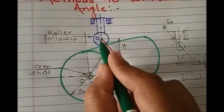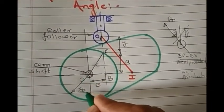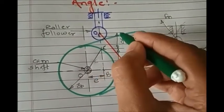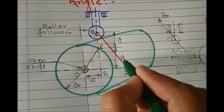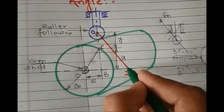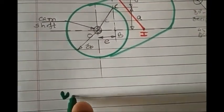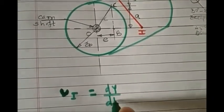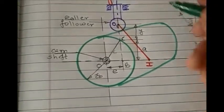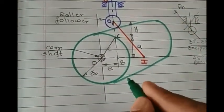Here we have a cam and follower arrangement with a roller follower with an offset distance e. The radius of the base circle of the cam is r_b. The distance travelled by the follower from the base circle is y. The symbol 'I' represents the instantaneous center of velocity of the cam and follower. We calculate velocity v_i, which equals dy/dt, and that equals IO times omega, where omega is the angular rotation of the cam.